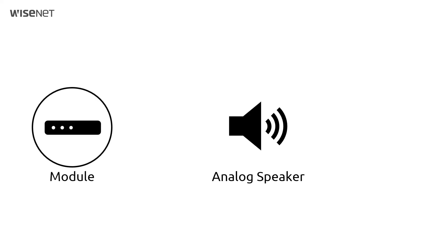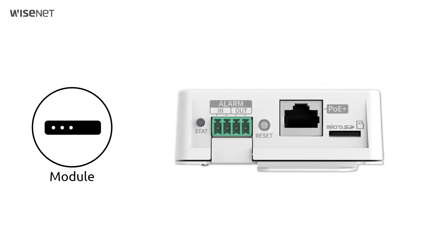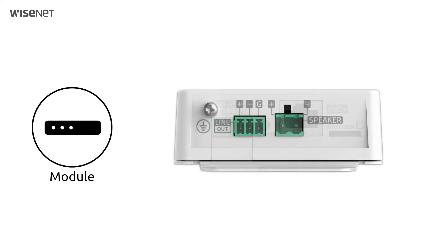IP Audio Module. If you want to configure the VOMS system with the existing speakers, then just add the IP Audio module. VOMS speakers embed it as default. The module has alarm input, SD memory card slot, and Ethernet port, and it is powered by PoE or PoE+. On the other side, there is a speaker port to connect to the speaker.